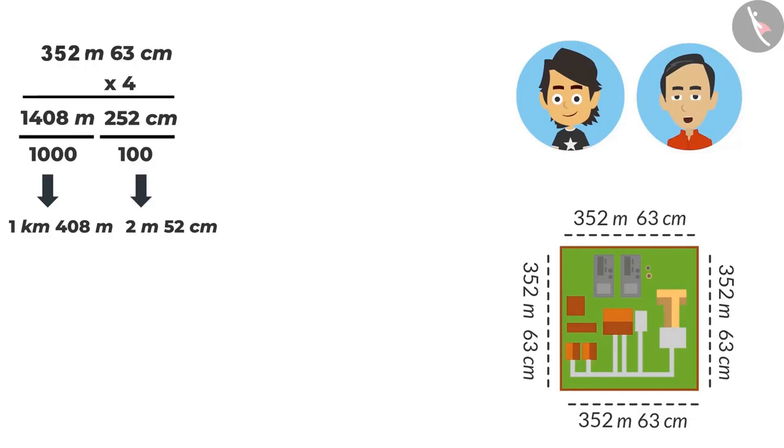Absolutely correct. Now tell me, how much is the total length? Total length would be 1 kilometre, 408 metres and 2 metres, 52 centimetres. But when there are two values in the metre, they can be added. Yes, then it would be better. This means the total length of your factory boundary would be 1 kilometre, 410 metres and 52 centimetres.